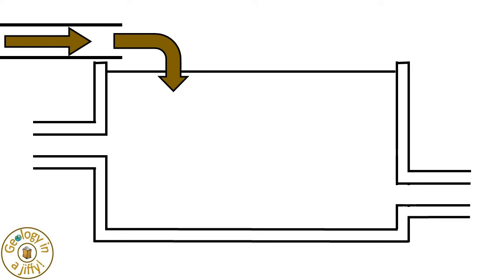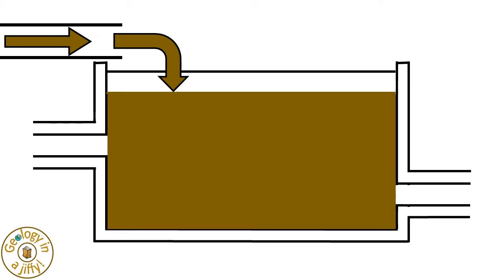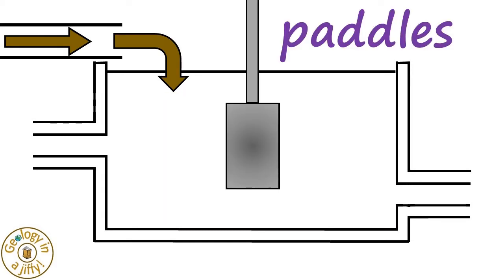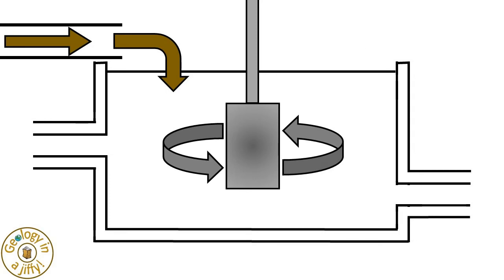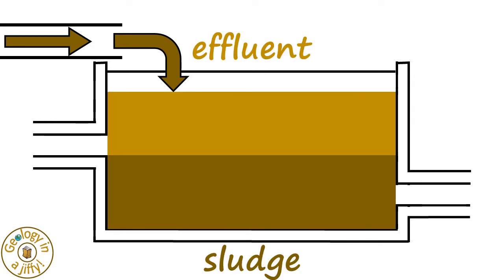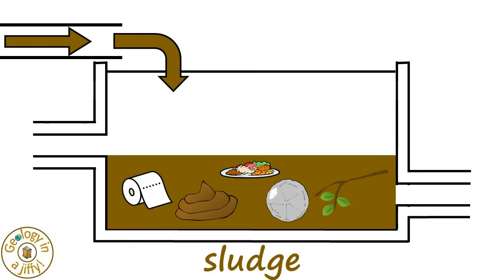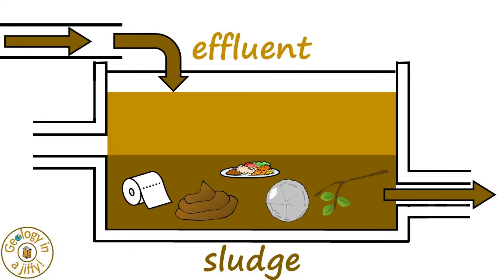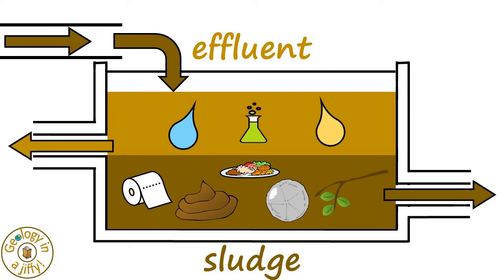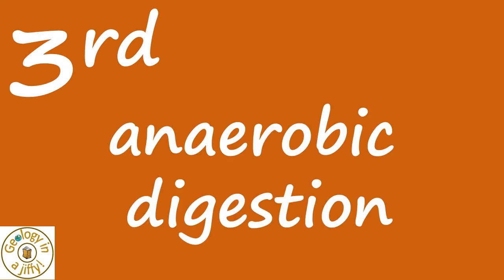The waste water is pumped into large tanks where it collects, and large rotating paddles then stir the mixture, separating sludge to the base and effluent towards the top. The more solid sludge sinks to the bottom — made of organic matter and grit — which is then pumped off. The effluent, the more liquid part, containing water, urine, small organic particles and some microbes, is pushed off into the pipes by the paddles.